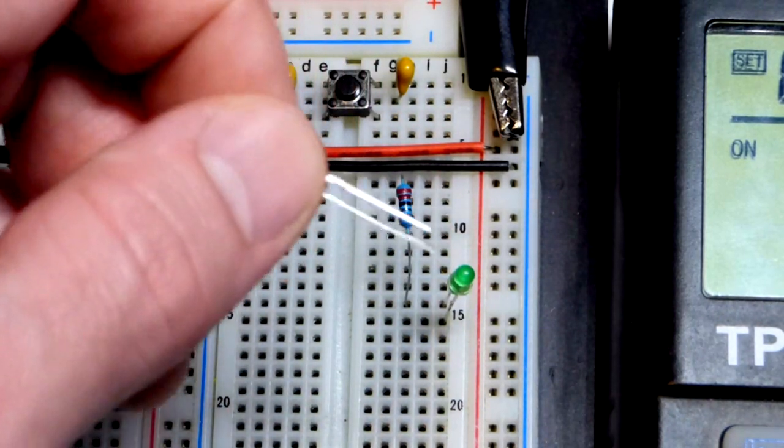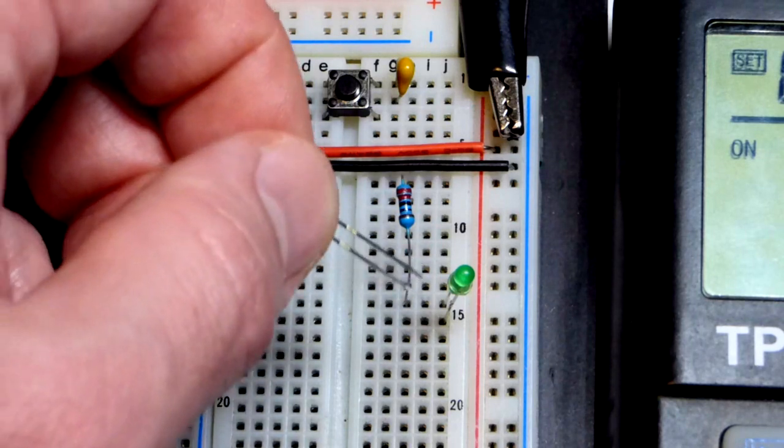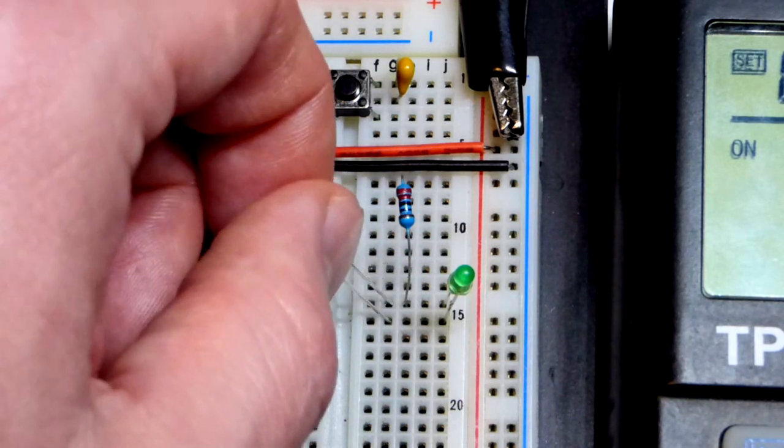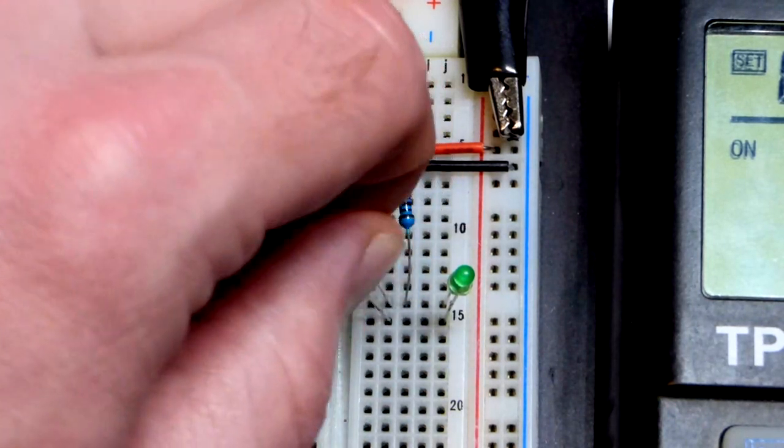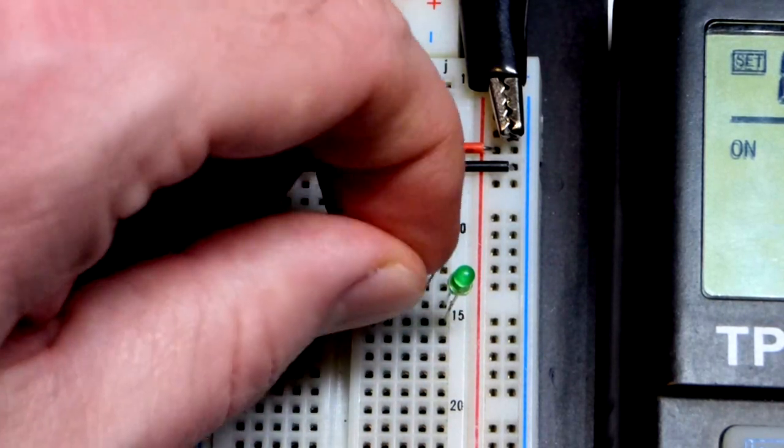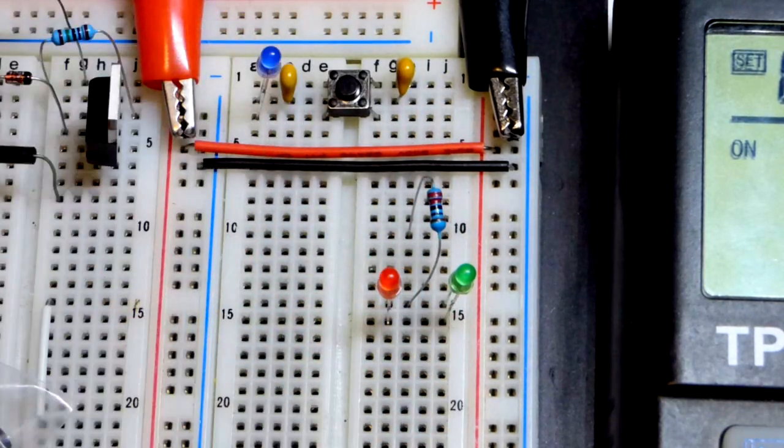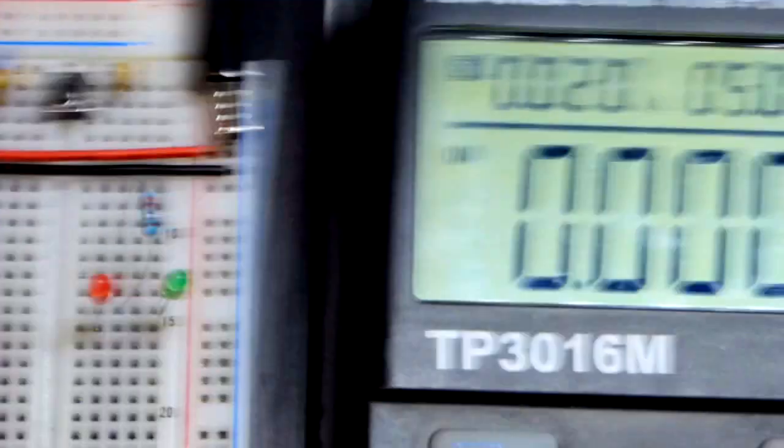We want the red LED the opposite direction. We're going to put the short lead, the cathode, to where the resistor is. Long lead, the anode, we're going to put farther down, one row down. So the anode of the red LED is to the cathode of the green LED.